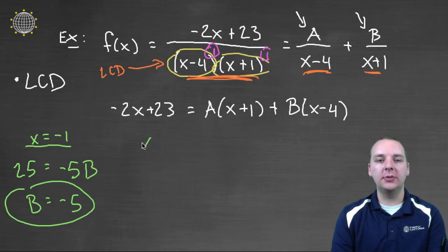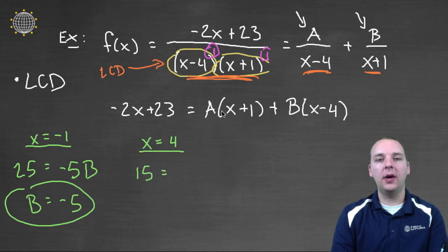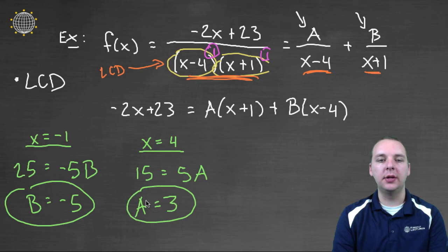Now let's do that other x we were talking about, x equals four. Let's do the same thing. Negative two times four is negative eight. Twenty-three minus eight, twenty-three minus eight would be fifteen. And then on the right hand side, we'd have four plus one is five. So we'd have five A, five A. And so A equals fifteen over five, which is three. So fast, so quick. And that's the A and the B, or what A and B should be in the decomposition.